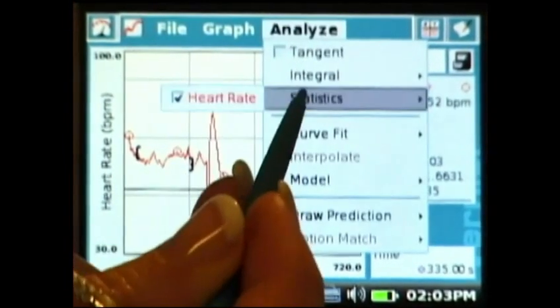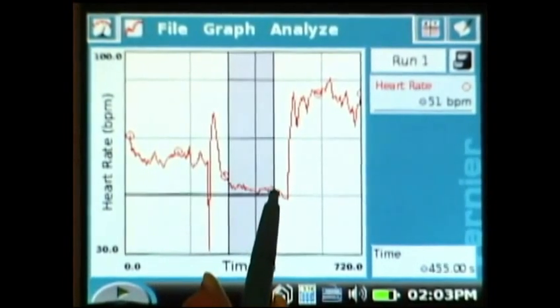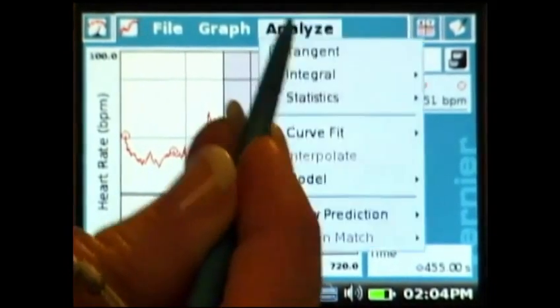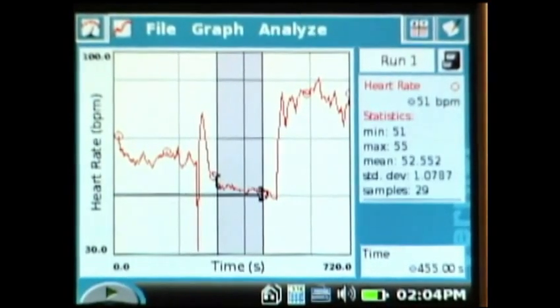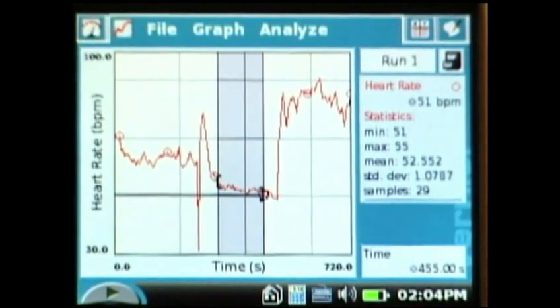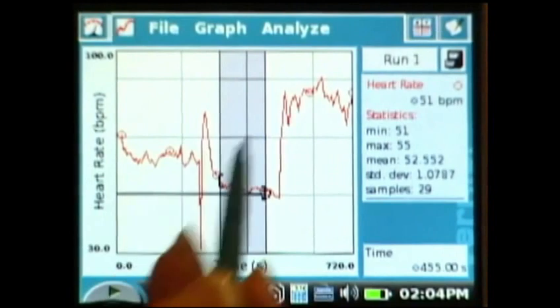The second section, if I turn the first one off. Second section I'll select a region where he's lying on the floor and calculate the statistics of the heart rate there and the average is down to 52.5 so we'll round that to 53 beats per minute during the part where he was lying on the floor, so quite a bit slower.